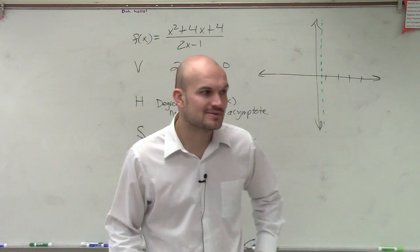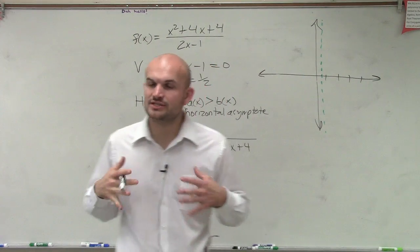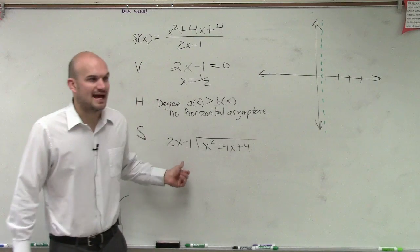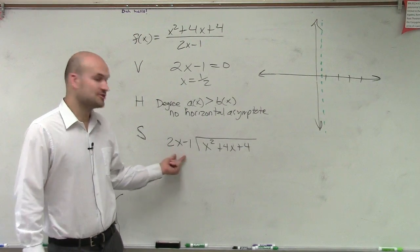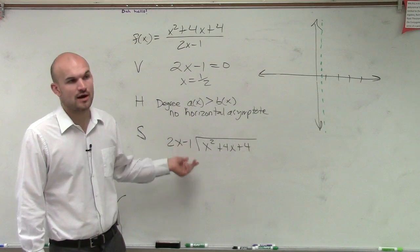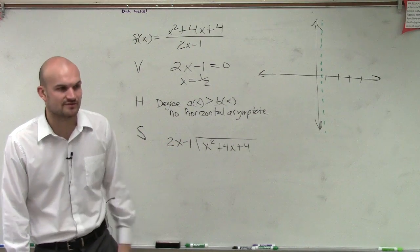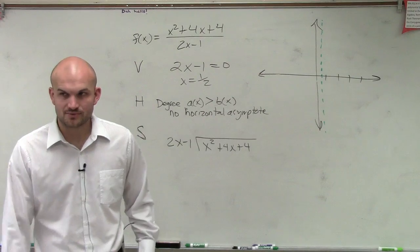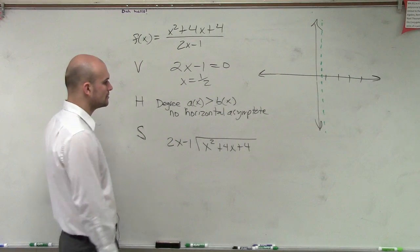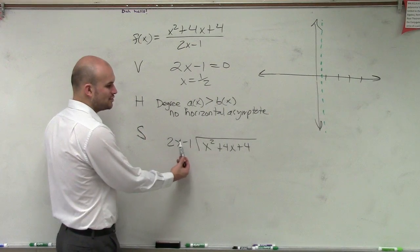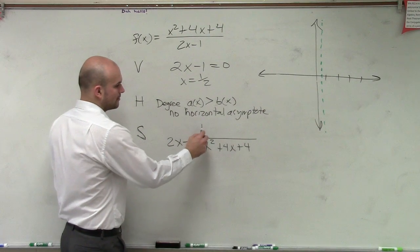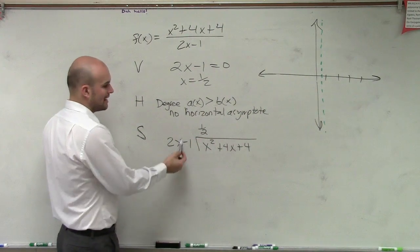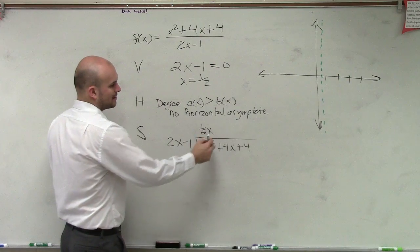We could use synthetic division for this problem. The only time we're going to use synthetic division is when your divisor is a linear binomial. Well, this one is linear because it's x raised to the first power and it is a binomial. So we could use synthetic division. But let's get a little practice with long division. So we say 2x divides into x squared.